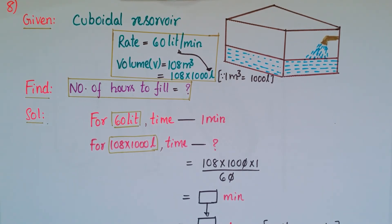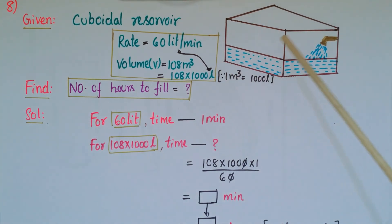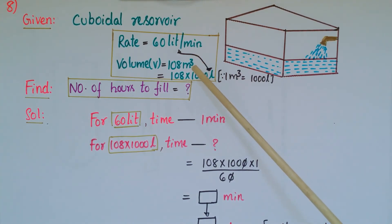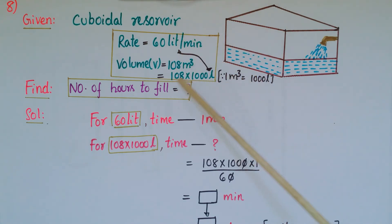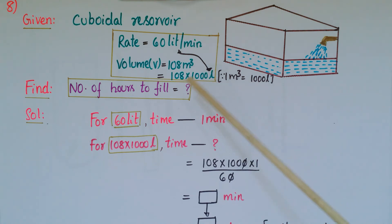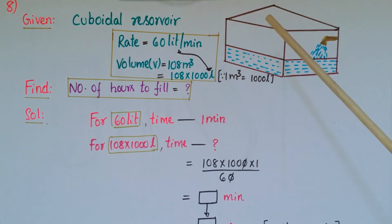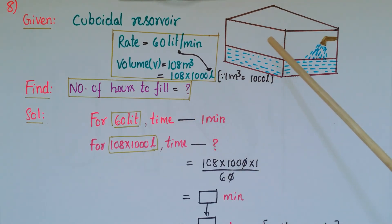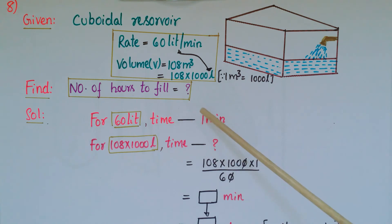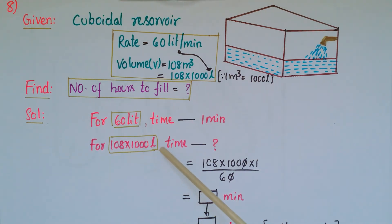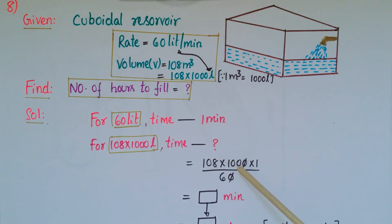This is problem eight. In this problem, water is poured into a cuboidal reservoir at the rate of 60 liters per minute. The volume of the reservoir is 108 meter cube. Convert this to liters: 108 into 1000 liters. We need to find the number of hours to fill this tank. For 60 liters, the time taken is 1 minute, so for 108 into 1000 liters we calculate the time accordingly.